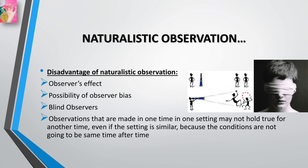The disadvantages of naturalistic observation include the observer effect, the possibility of observer bias, and blind observer issues. Observations made in one setting may not hold true for another time or setting, since conditions vary. The observer effect is the tendency of people or animals to behave differently when they know they are being observed. Observer bias is the tendency to see what one expects to see. A blind observer — someone who does not know the research question — has no preconceived notions about what they should see, making it a good idea to use more than one observer so observations can be compared.